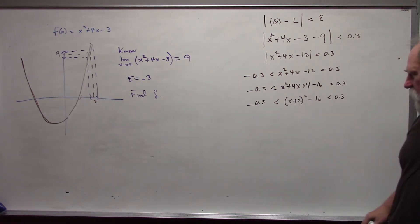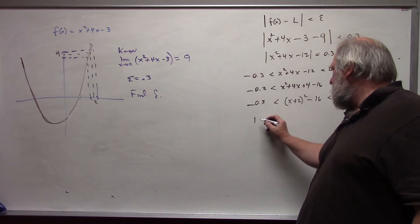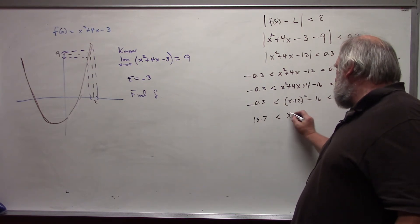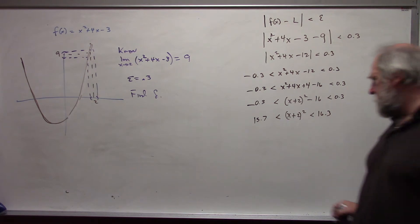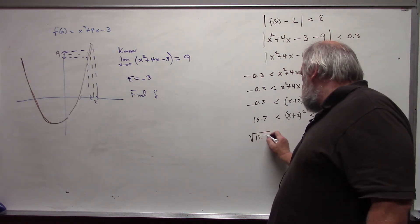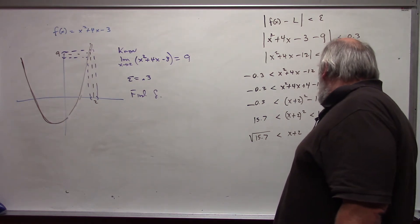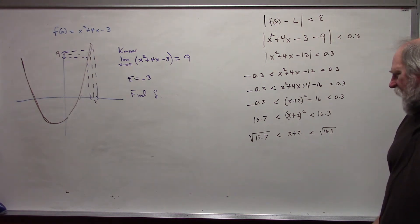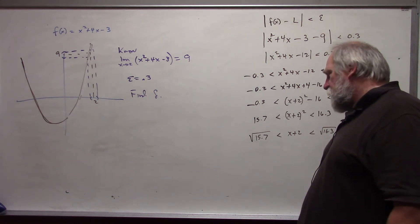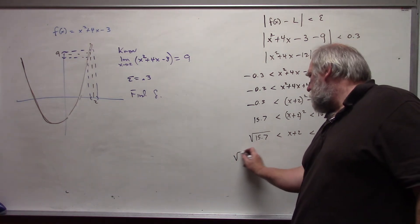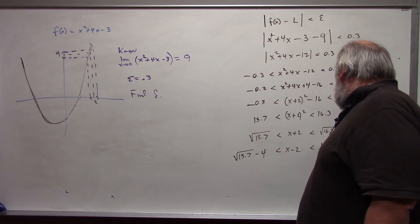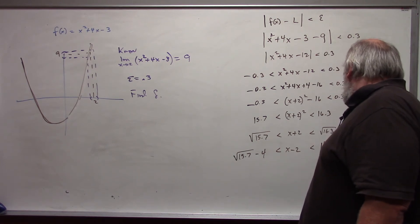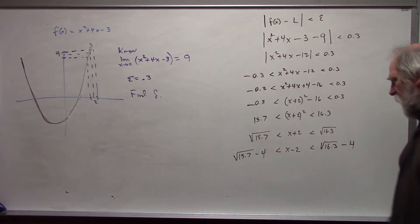I can then add 16 to both sides, or to all three parts, 15.7 is less than x plus 2 quantity squared is less than 16.3. Take the square root. I want to get x minus 2, so I need to subtract 4 from everywhere.